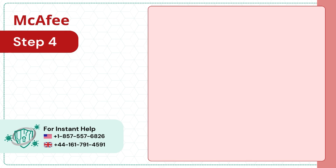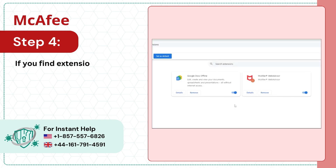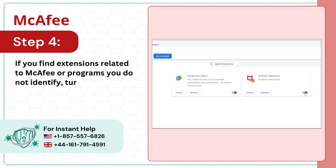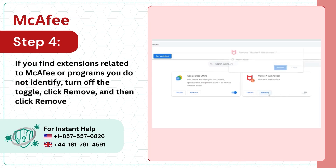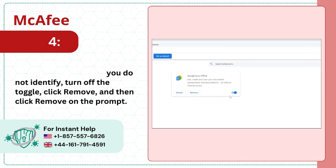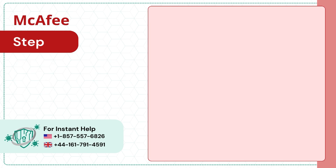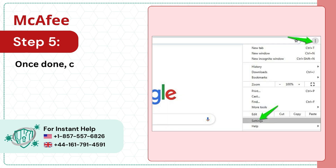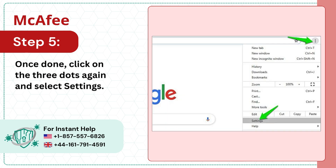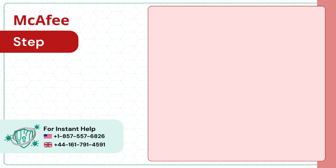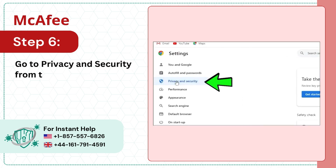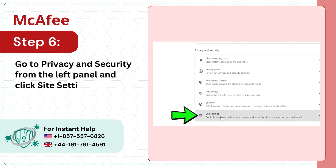Step 4: If you find extensions related to McAfee or programs you do not recognize, turn off the toggle, click Remove, and then click Remove on the prompt. Step 5: Once done, click on the 3 dots again and select Settings. Step 6: Go to Privacy and Security from the left panel and click Site Settings.